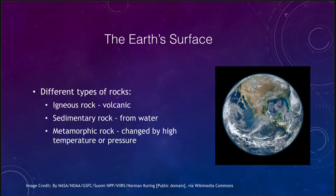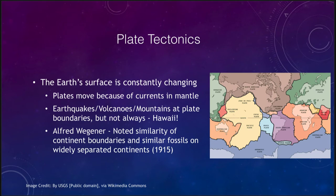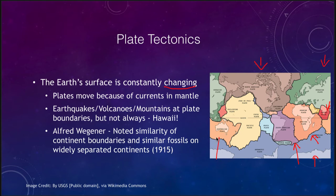Now let's look at what the Earth's surface looks like. The Earth's surface is divided into a number of different plates, and it is constantly changing. You can see a number of plates, including the North American plate, the Eurasian plate, the South American plate, the Antarctic plate, the African plate, India as a separate plate, and the Australian plate. These are all in constant motion relative to each other, driven by currents down in the mantle — that plasticky part below the crust — which cause the plates to move as well.